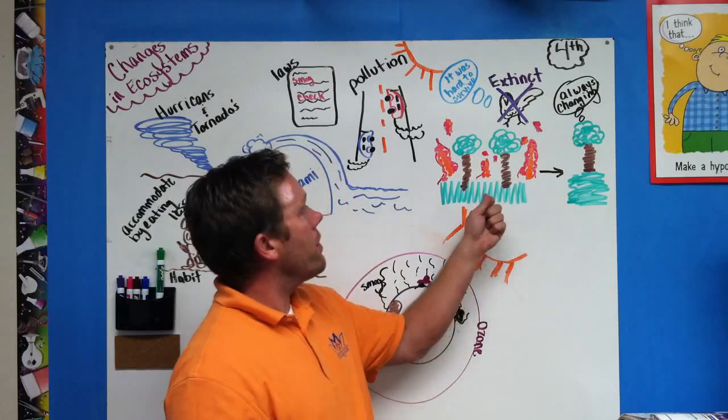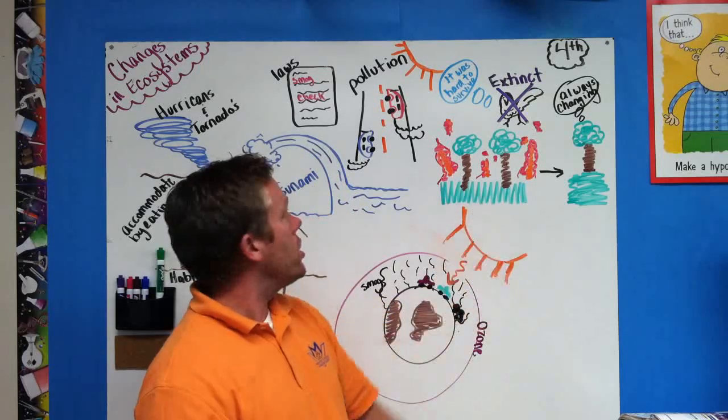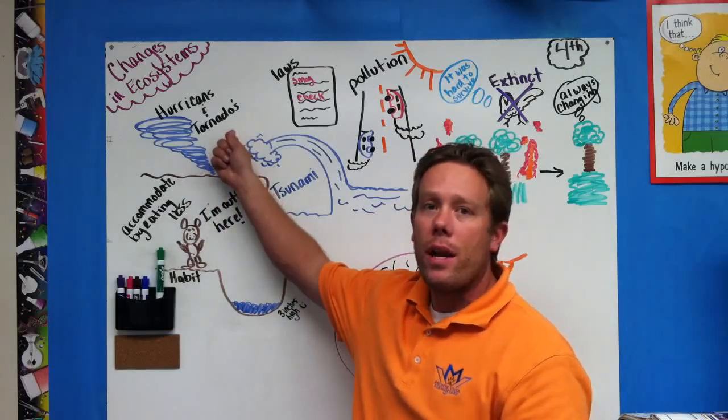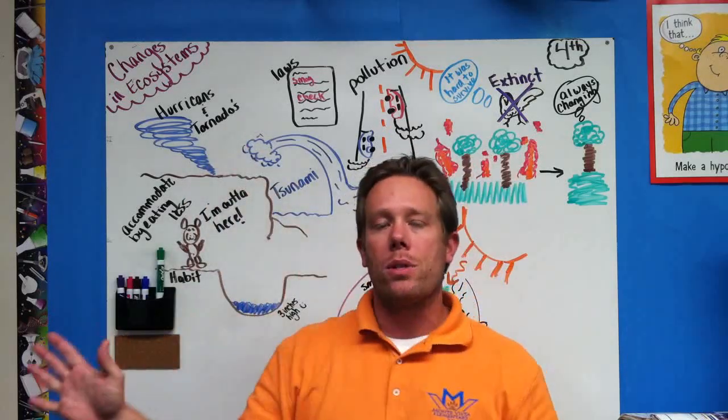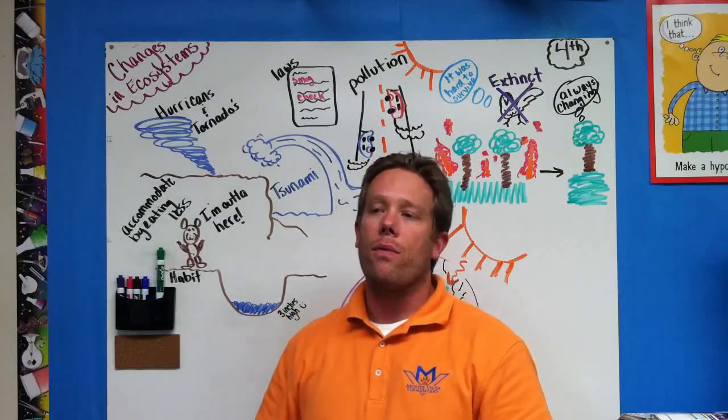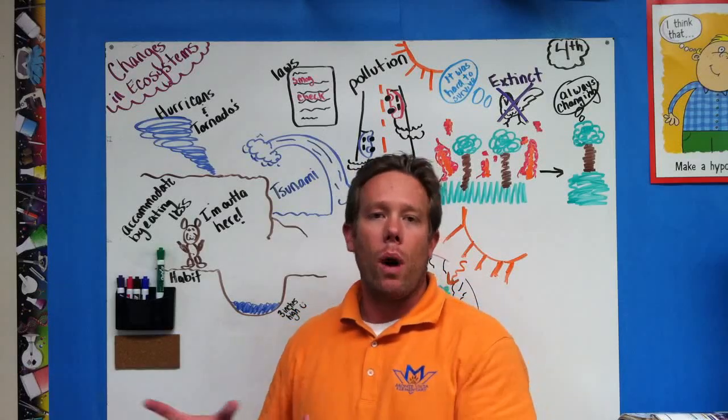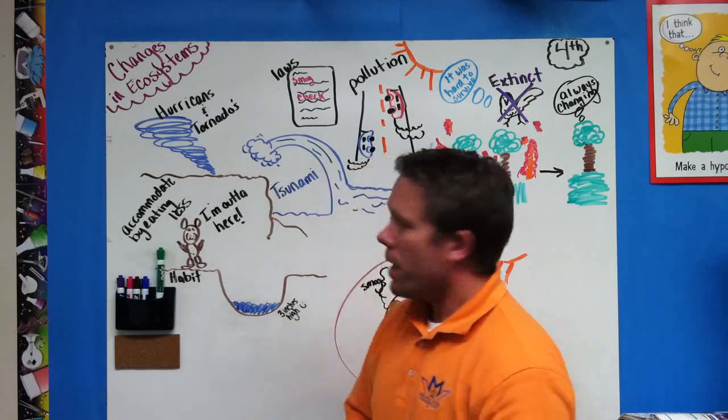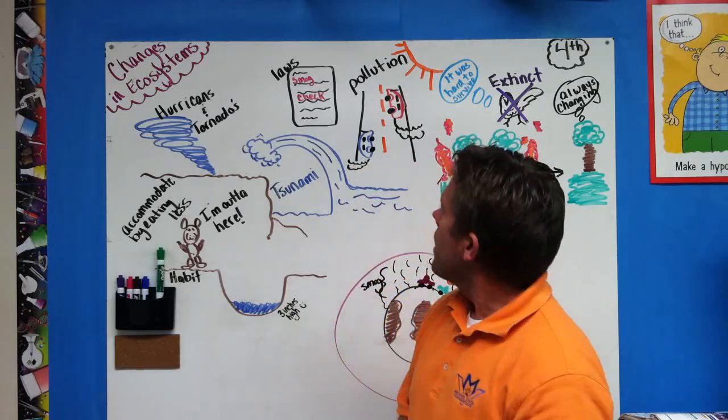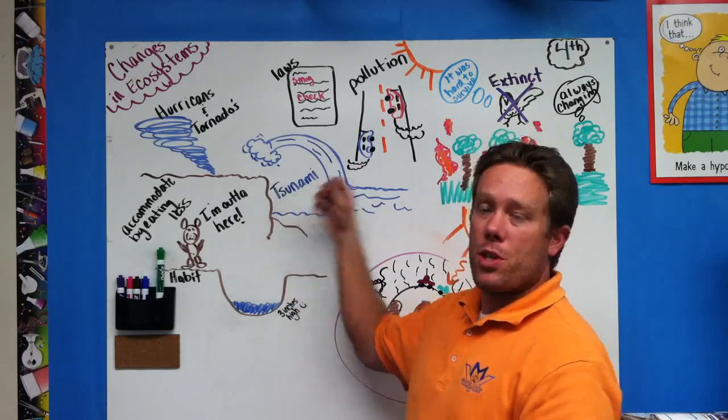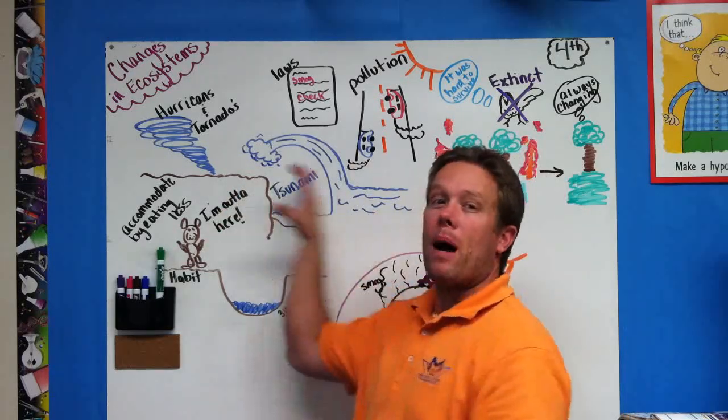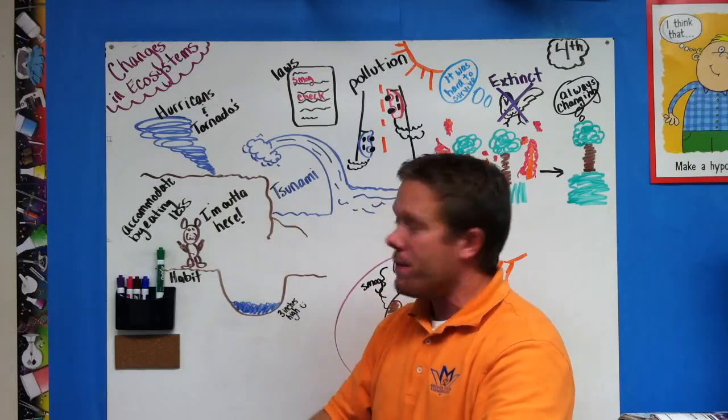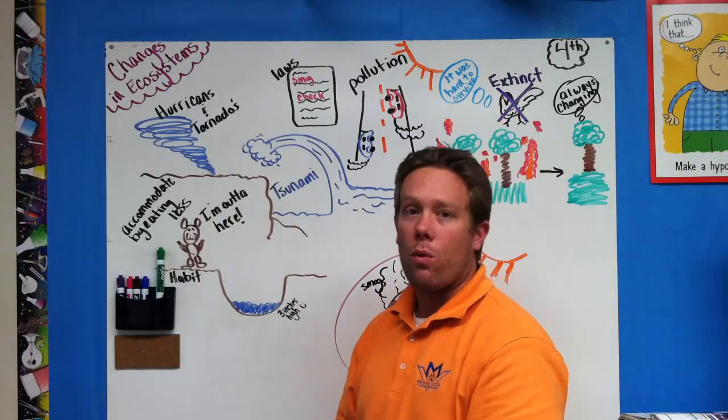So you have fires that can change an ecosystem. You have a hurricane and a tornado that can wipe out an entire forest. It could wipe out an entire pond or lake. It could wipe out an entire farm. You have tsunamis, which are huge waves that could wipe out an entire coastline and all the life that lives in the coral reef.